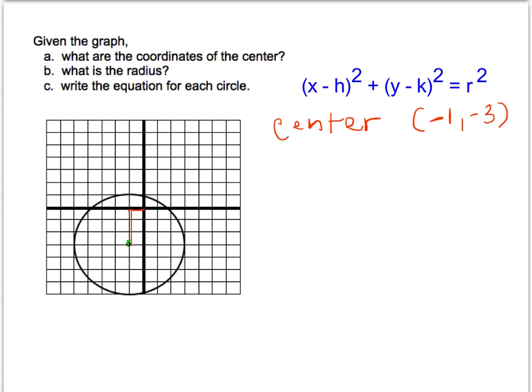The radius of the circle, if I start out at the center and count out either left, right, up, or down, in all directions I'm going to count out a value of 4 for my radius.